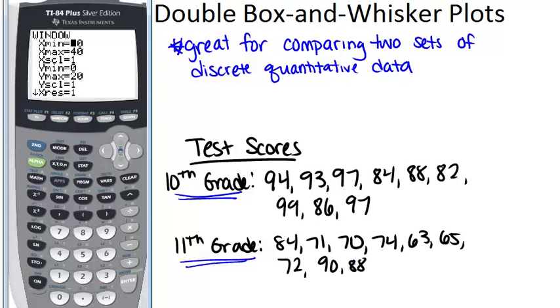so the range of our scores was between about 60 and 100. That's what I should make my x min is 60 and my x max is 100 so that I'll actually be able to see my box and whisker plots.